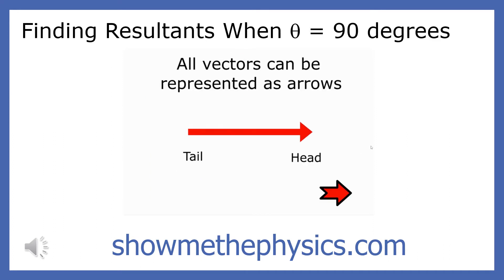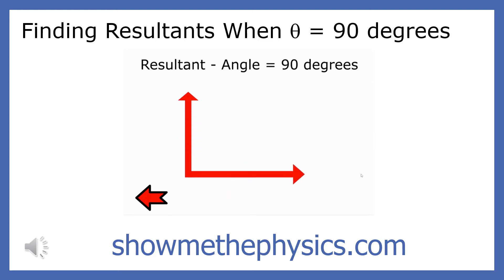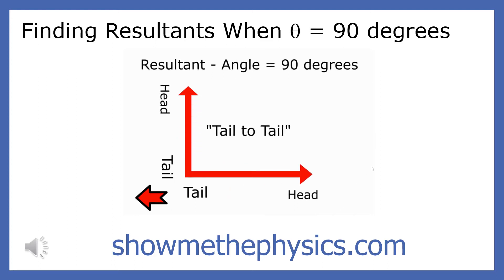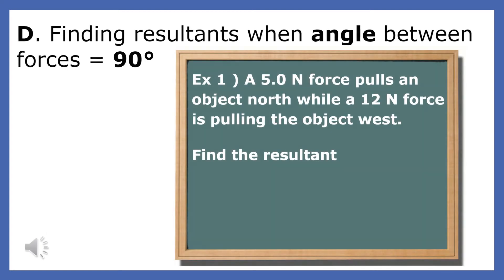If one force is pulling and the other force is pushing, the vectors are connected head to tail. Finding resultants when the angle between the forces is 90 degrees: a 5 newton force pulls an object north while a 12 newton force is pulling the object west. Find the resultant.